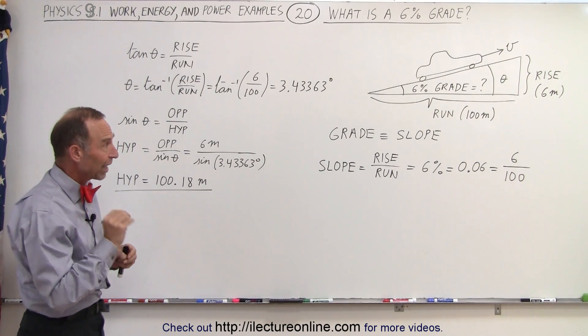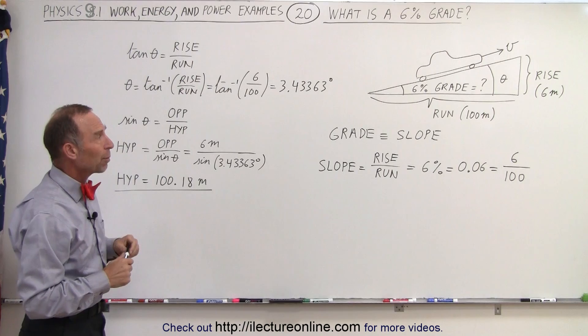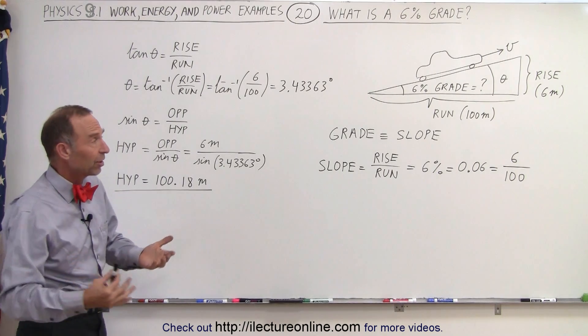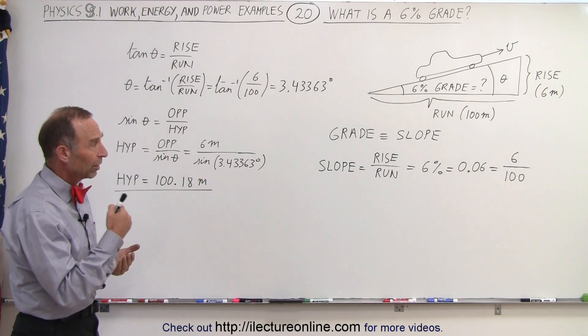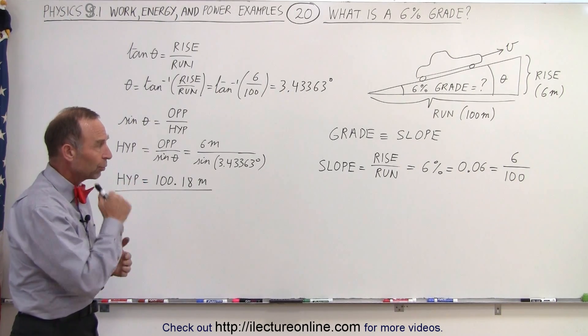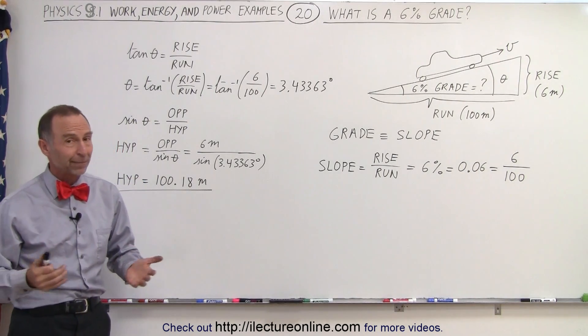But just so you know and understand the pure definition of what we mean by the grade or 6% grade on a road, it's simply the same as the slope. It's the ratio of the rise over the run, and that's what it means.